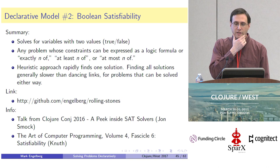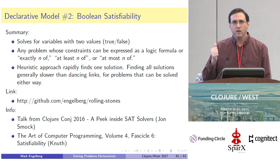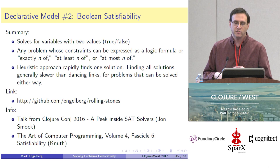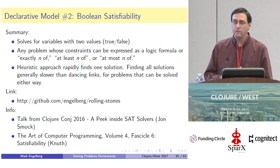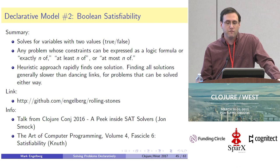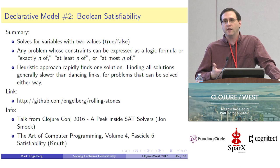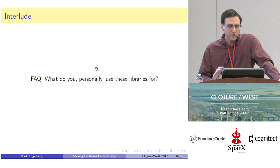That brings us to the end of declarative model number two: Boolean satisfiability. This model is really great for working with variables that can take on two values — true or false. It's great when you have constraints expressible either as a logic formula or as exactly-n-of, at-least-n-of, or at-most-n-of. From the timing tests, the heuristic approach is good at rapidly finding one solution, but if you want to find all solutions, you should use Dancing Links — assuming your problem can be solved with Dancing Links.